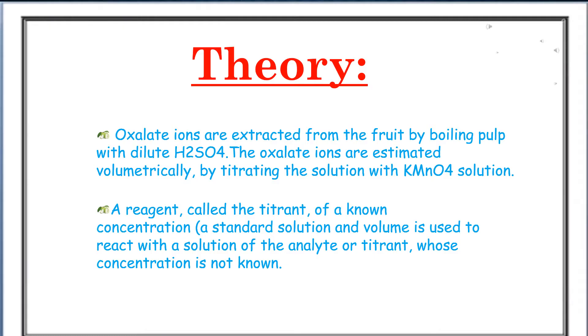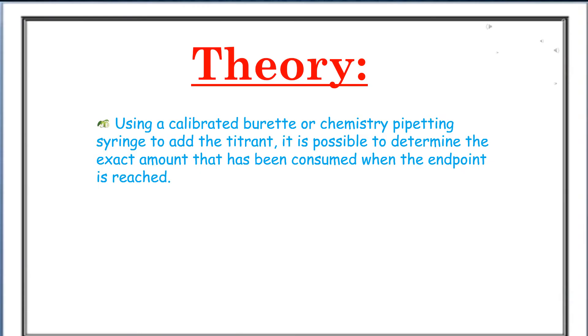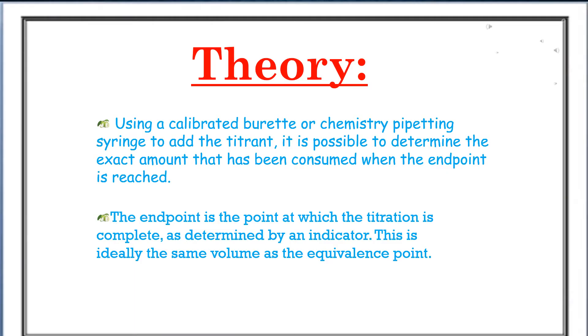A reagent called the titrant of unknown concentration, a standard solution and volume, is used to react with a solution of the analyte or titrand whose concentration is not known. Using a calibrated burette or chemistry pipetting syringe to add the titrant, it is possible to determine the exact amount that has been consumed when the endpoint is reached. The endpoint is the point at which the titration is complete, as determined by an indicator. This is ideally the same volume as the equivalence point.